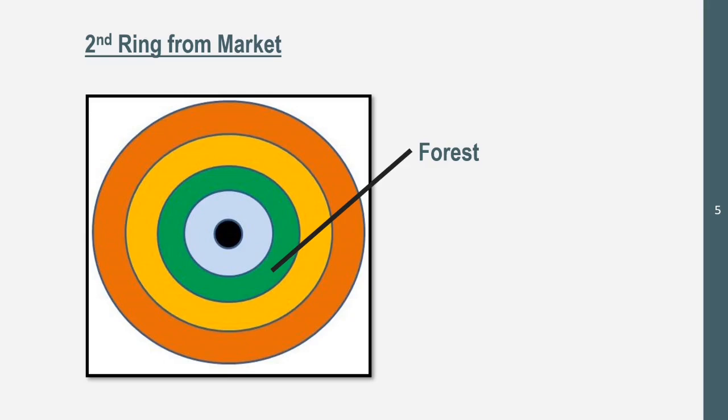The second ring from the market is our forest area. This is where wood products are obtained and used to create things. We see deforestation, maybe factories that use wood to create things like pencils, chairs, and boxes. Think of wood, think of the second ring, think of forest.